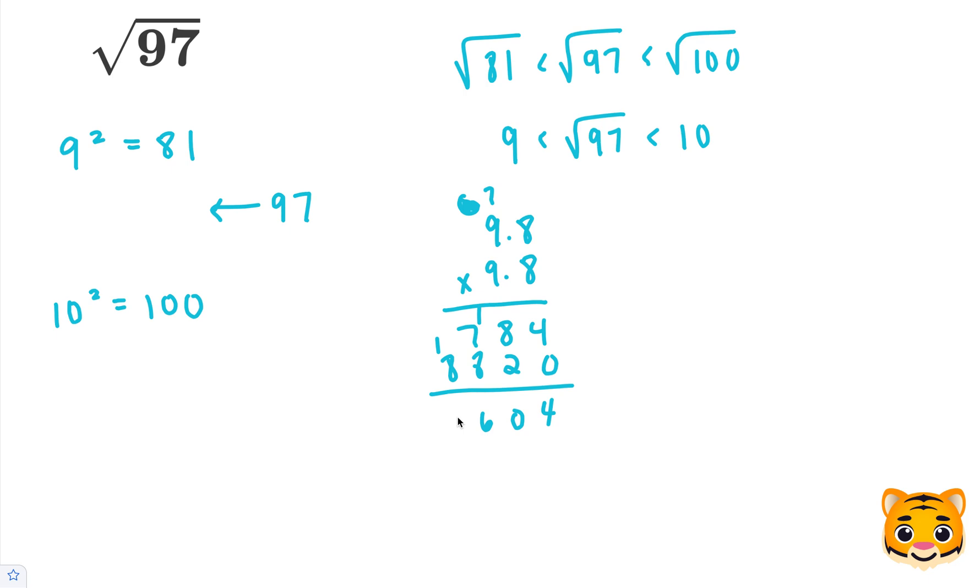Now, when we add these together, we end up getting 96.04, which is very close to 97. Let's just try 9.9 times 9.9 to see if we can get any closer.